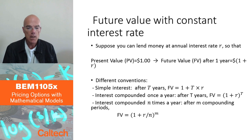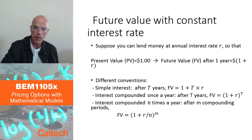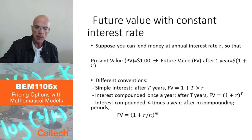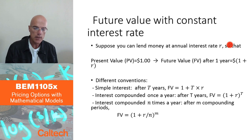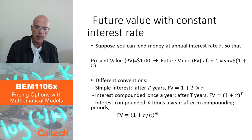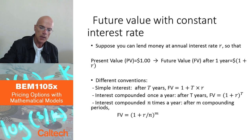If we let the annual interest rate be denoted small r, and we invest one dollar today — the present value — then the future value after one year is 1 + r dollars.